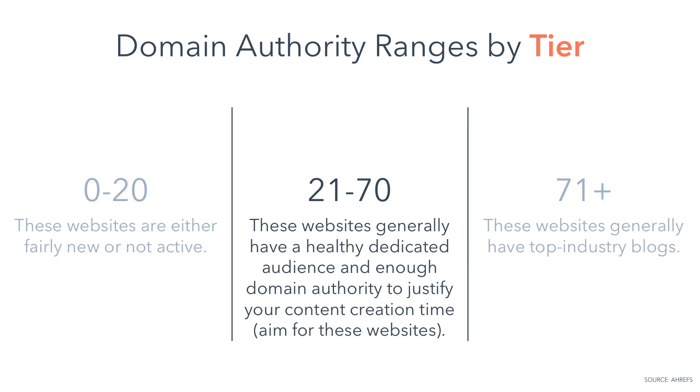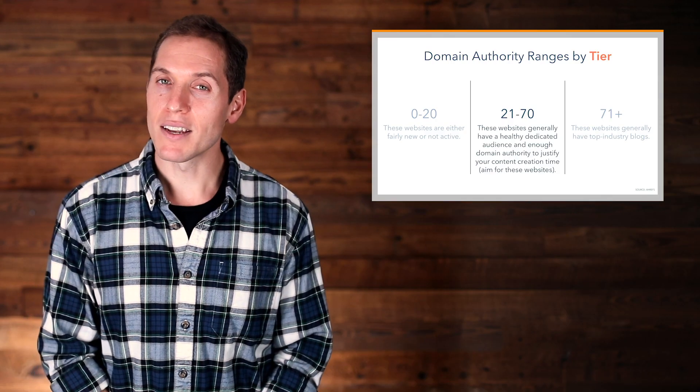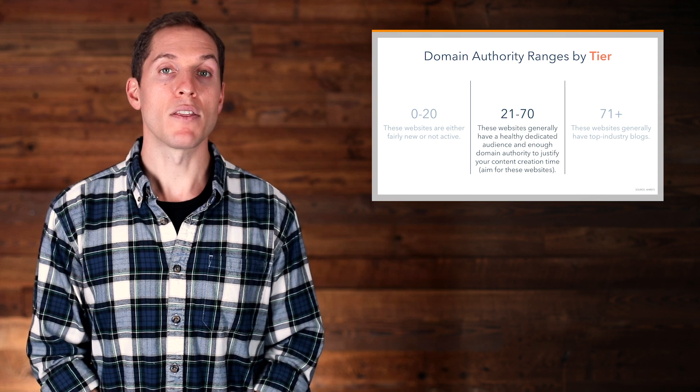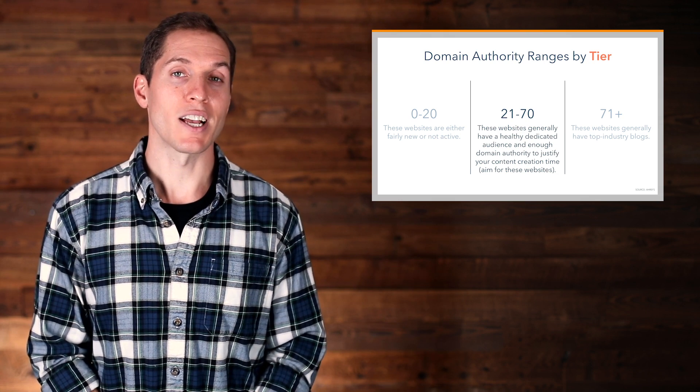Tier 2, a website with a domain authority between 21 to 70. These are the websites you should be aiming for. Websites in this tier generally have a healthy, dedicated audience and enough domain authority to justify your content creation time. Keep in mind, the higher the domain authority, the more writing guidelines you'll receive and the more difficult it will be to secure a guest blog opportunity.